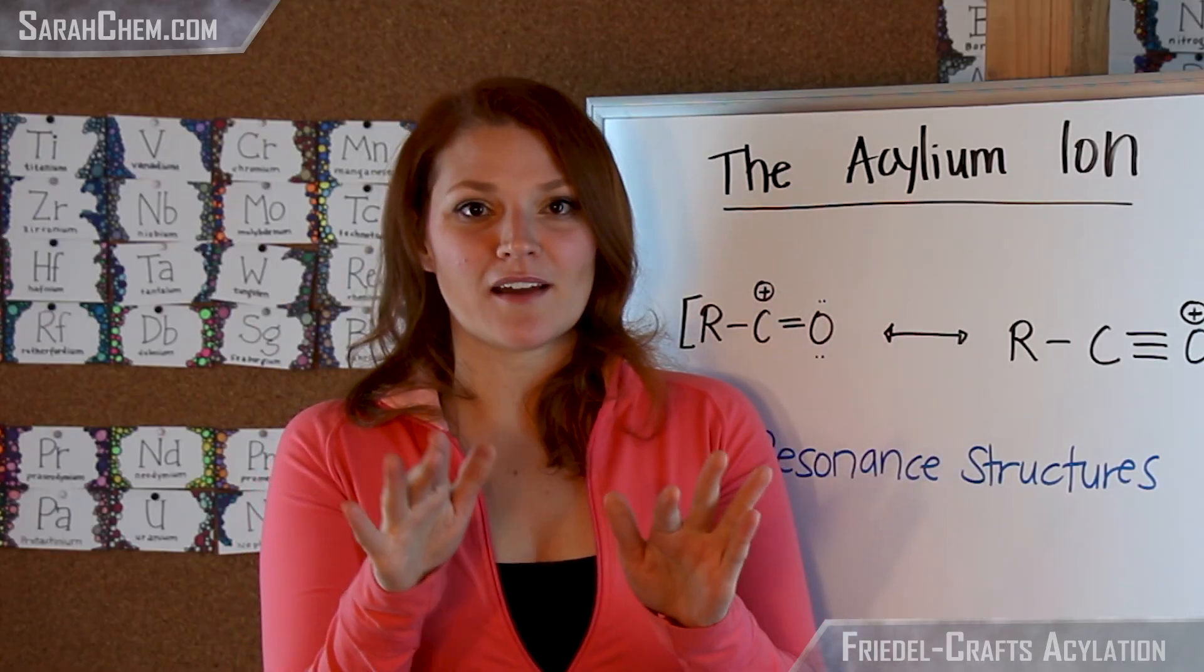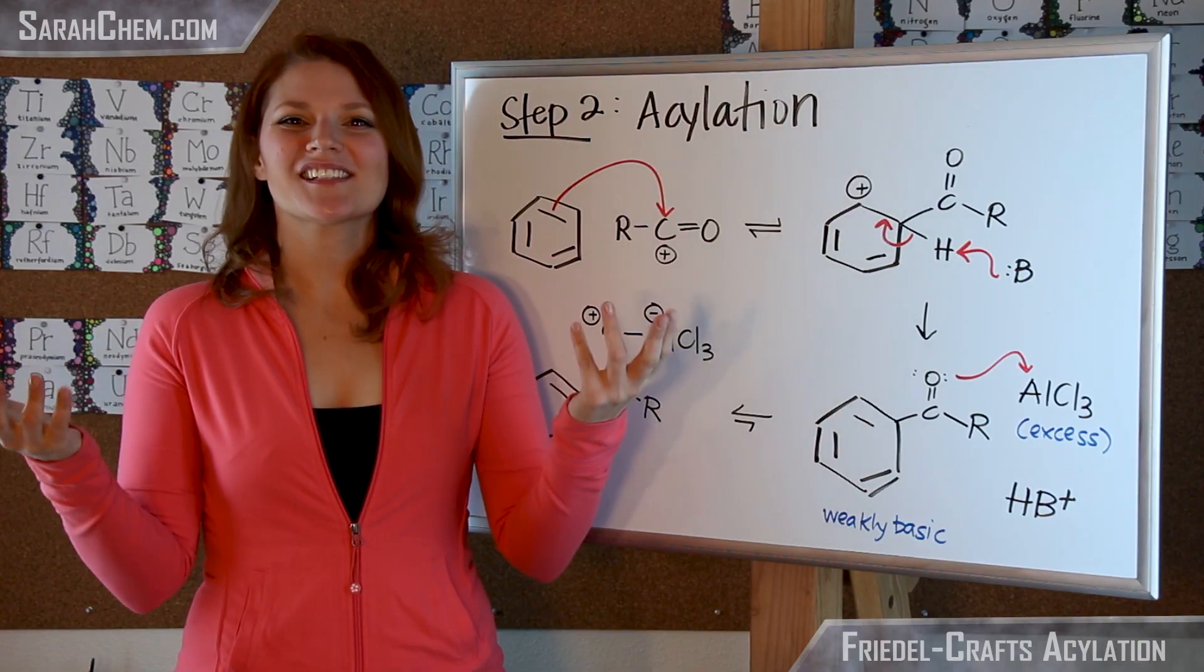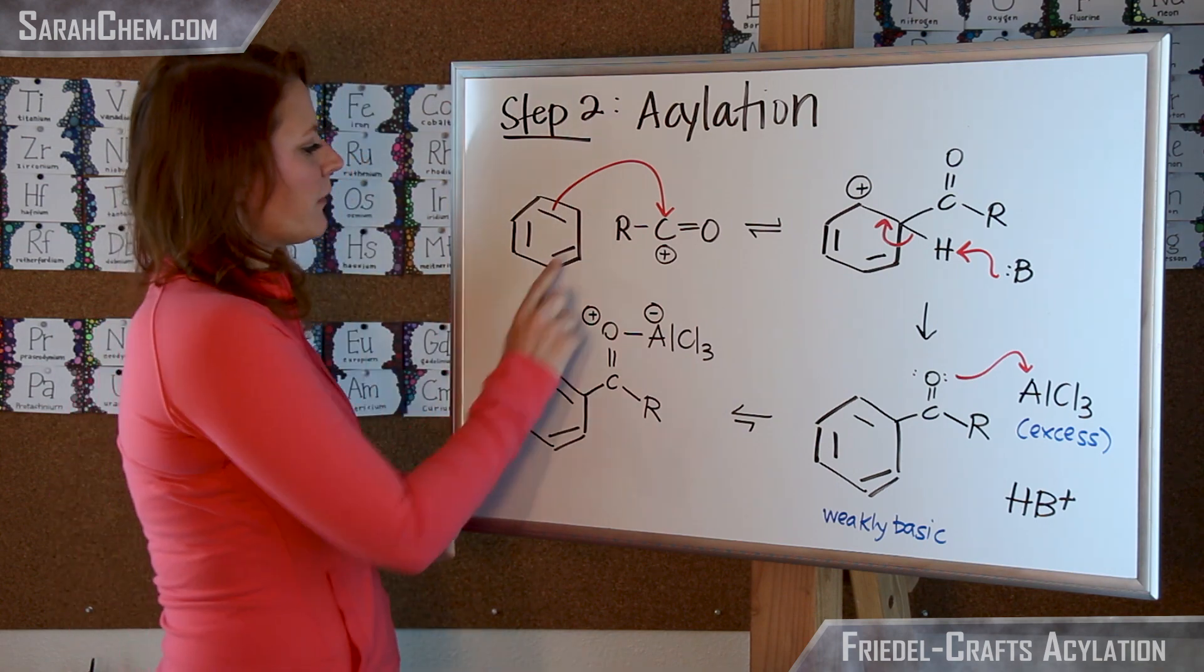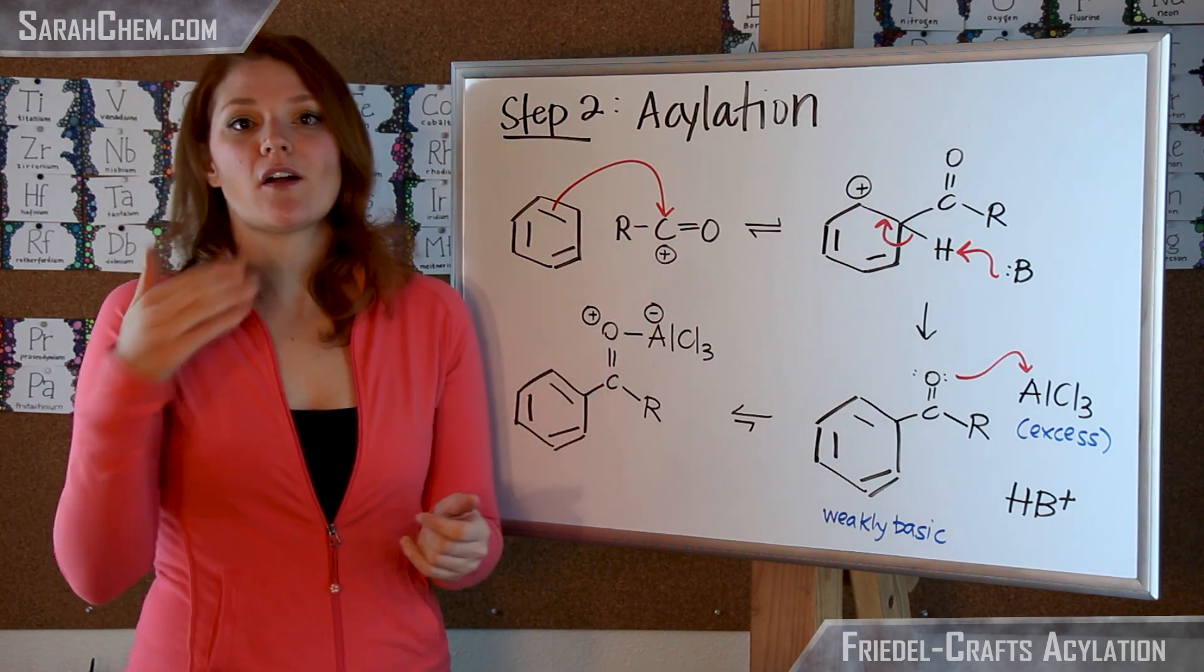So now that we've talked about it, let's take a look at the next step of the mechanism. So let's go ahead and take a look at this acylation step now. So over here, we have the benzene group and we have the electrophile that we formed.